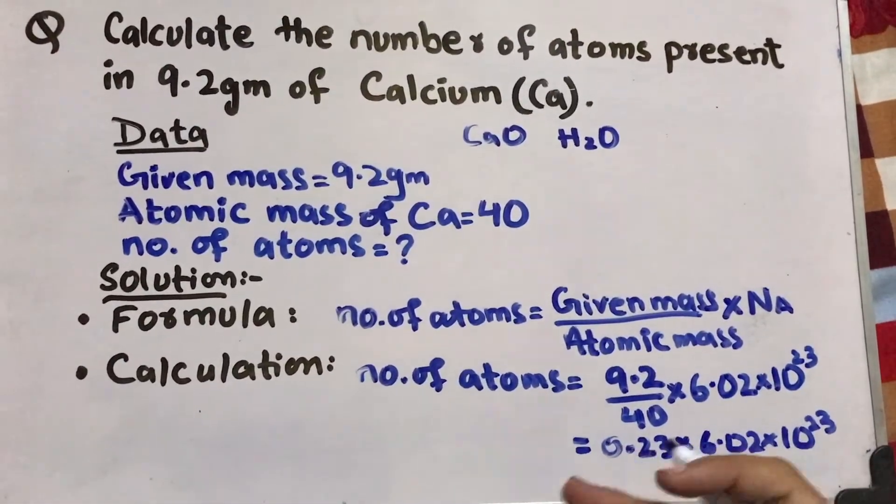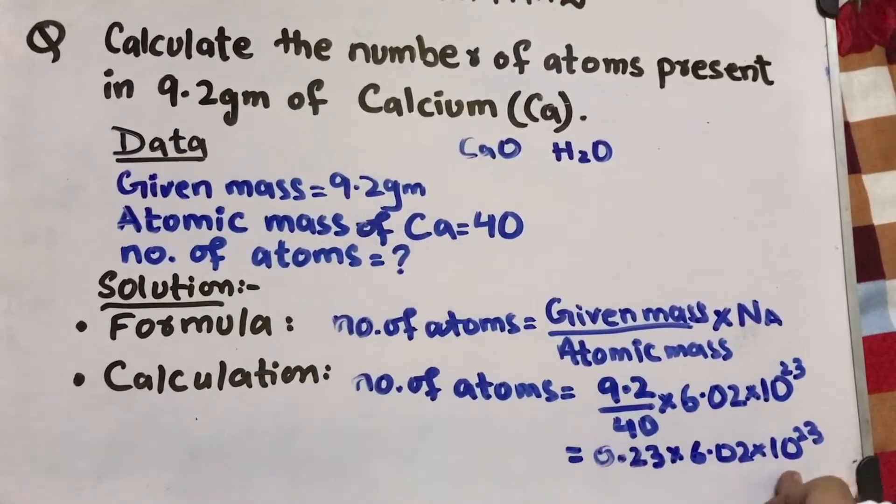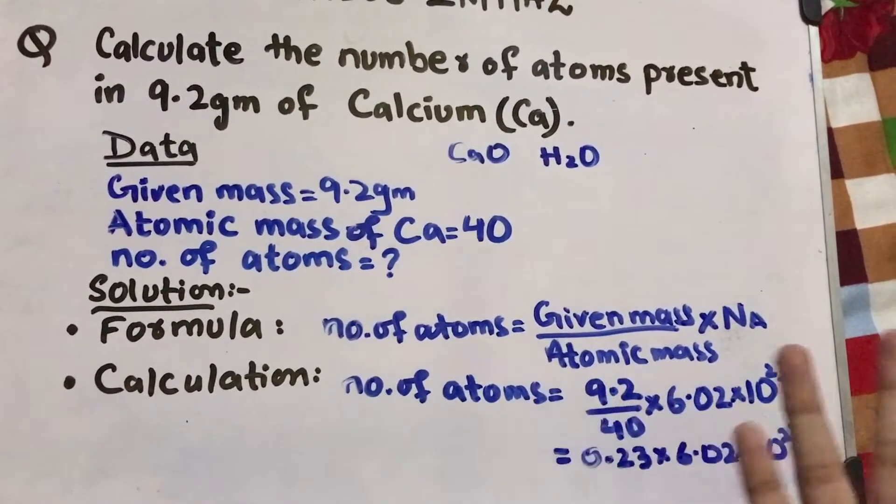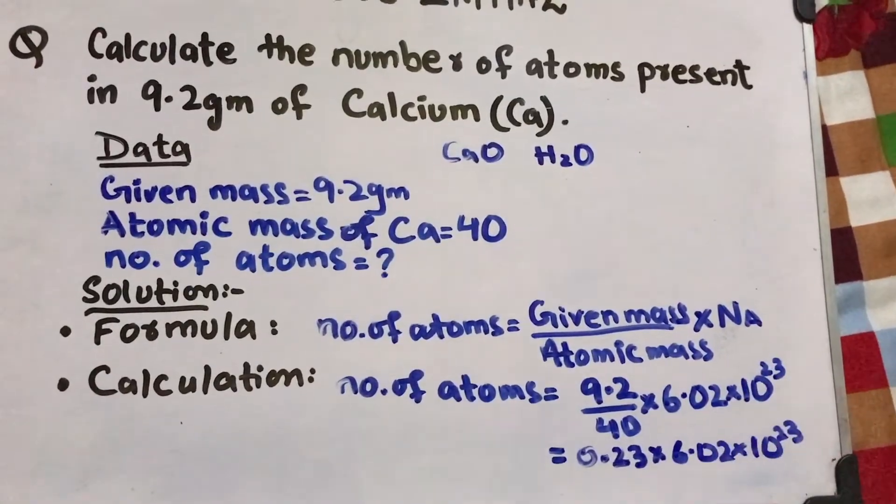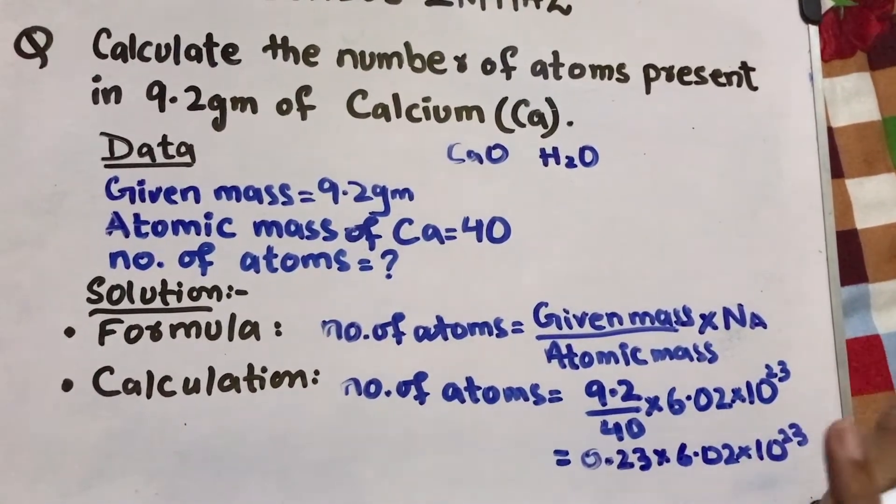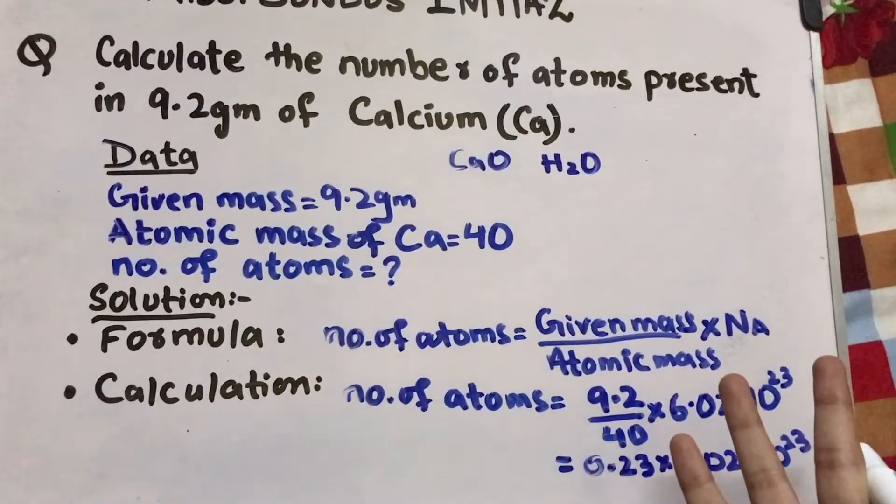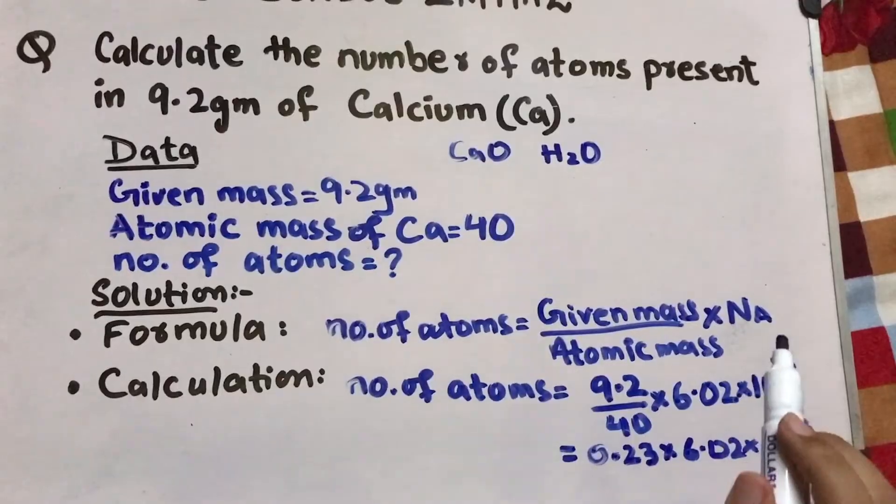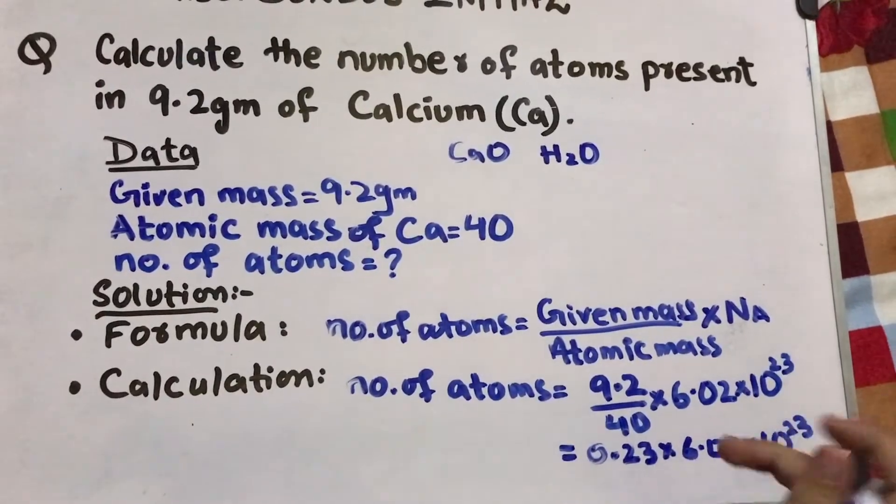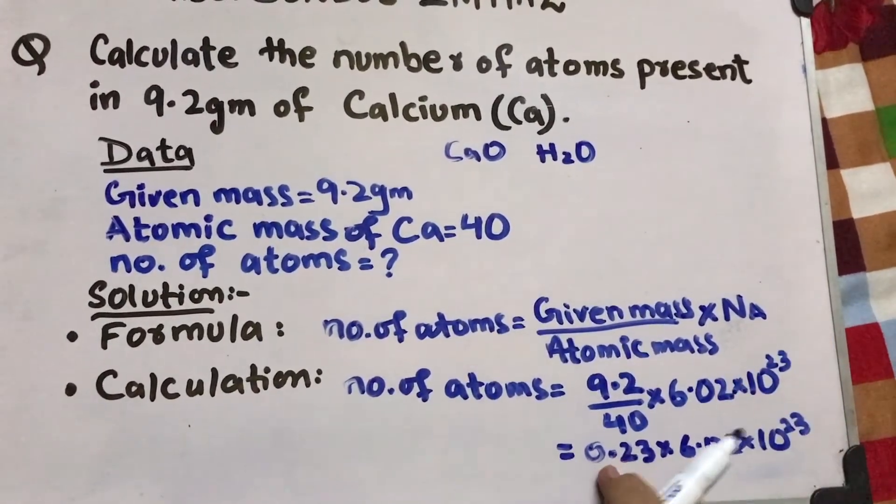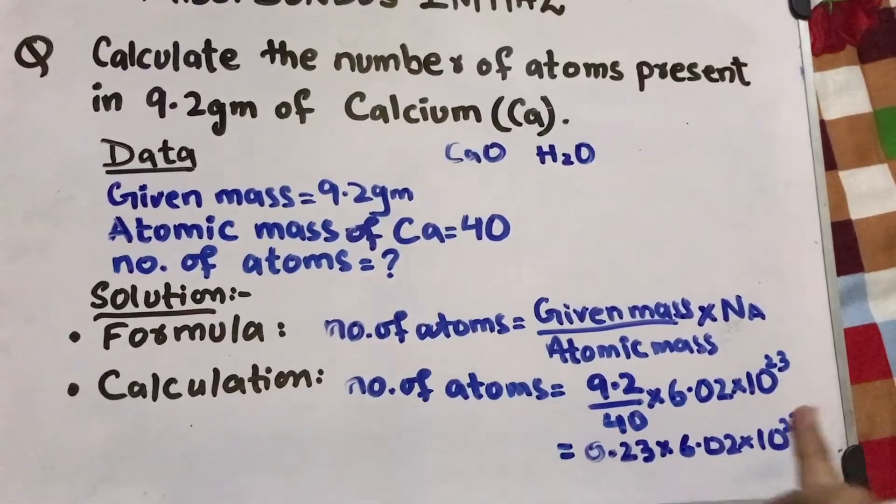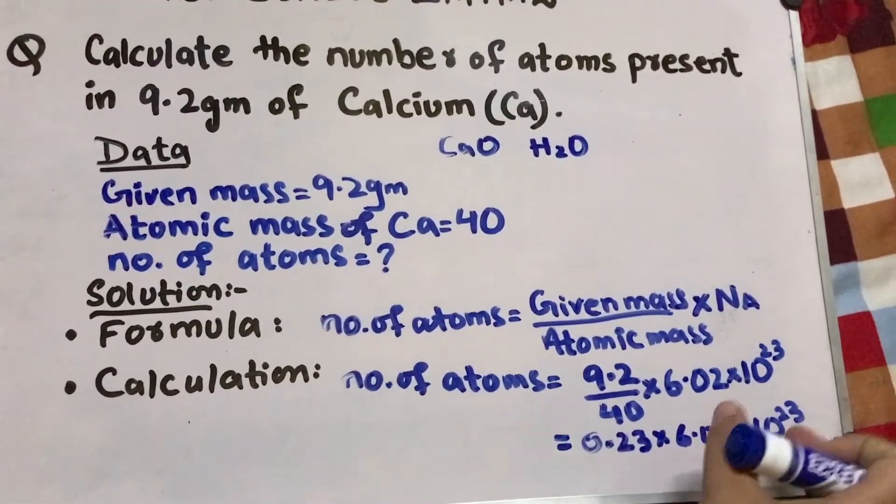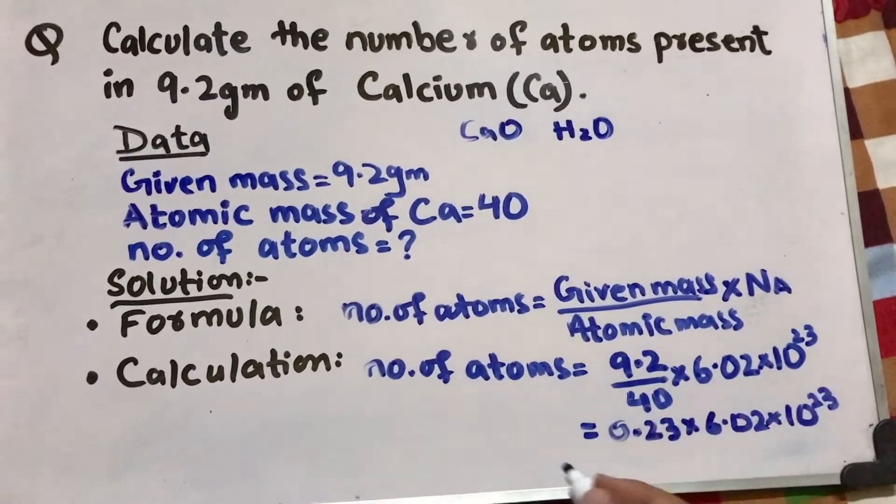Now when you solve with scientific calculator, you will need to add the exponents. But if you have a simple calculator, because in 9th and 10th, simple calculator is allowed and scientific is not, then what do you do? Only these numbers could be multiplied. So multiply 0.23 times 6.02 and we will write the exponents as it is.